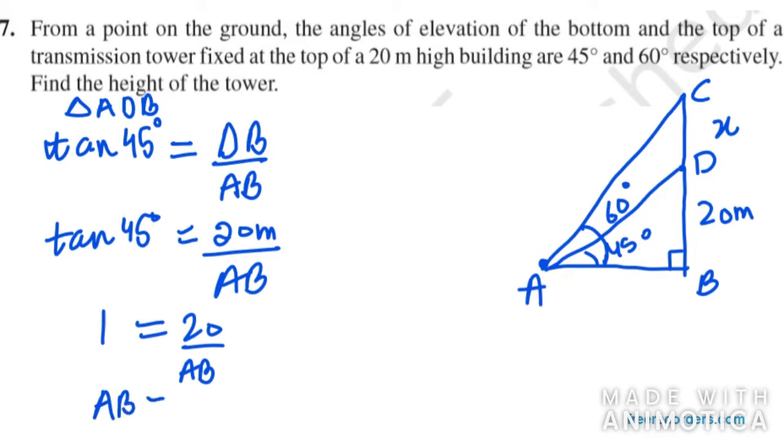In this case now we need to apply similarly for triangle ABC. We again need to apply tan 60 degree here because we need to find the perpendicular length. In this case it will be X plus 20 in case of triangle ABC.